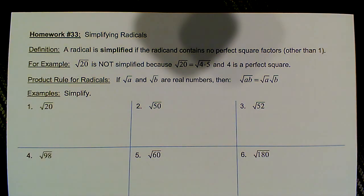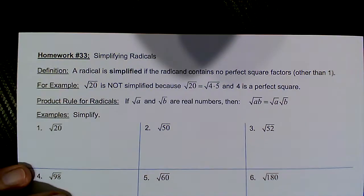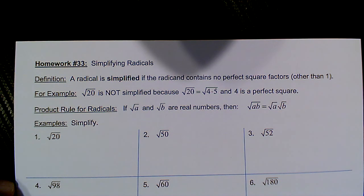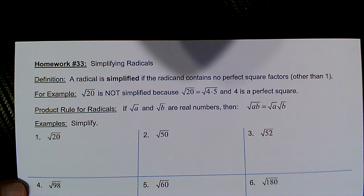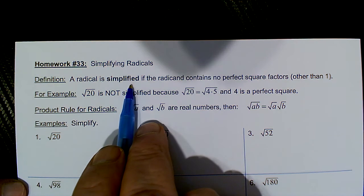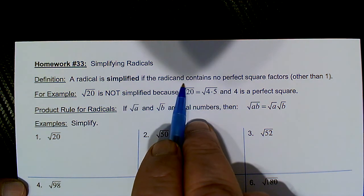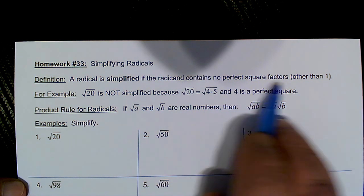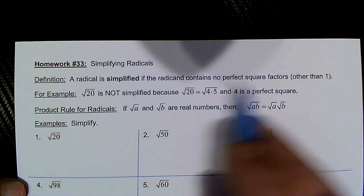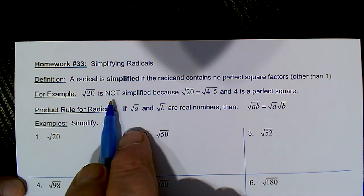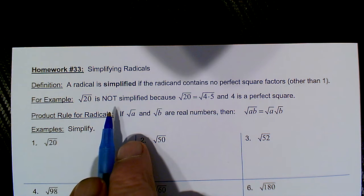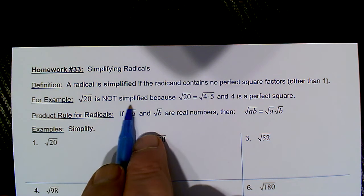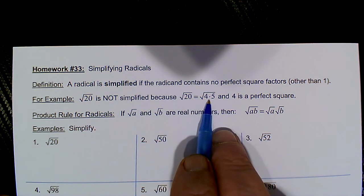Hello everyone, here is homework number 33: simplifying radicals. We worked with radicals on homework 32, and now we say that a radical is simplified if the radicand — that's the number under the radical — contains no perfect square factors other than one. So for example, the square root of 20 is not simplified because we could break it down.